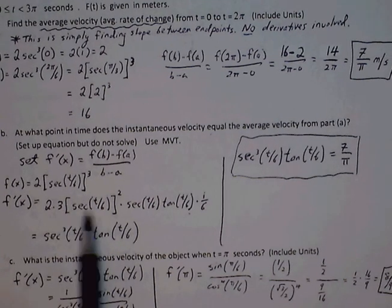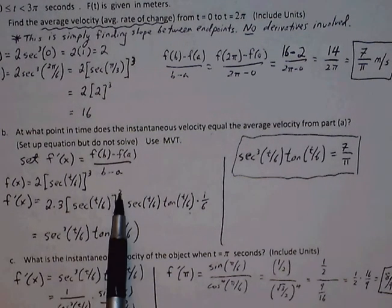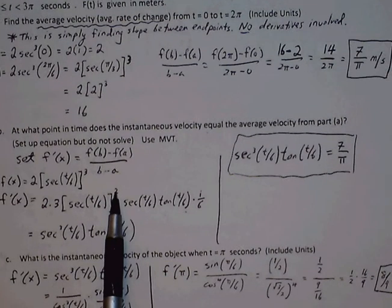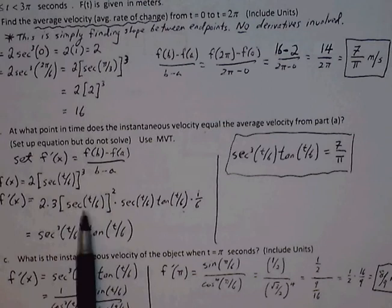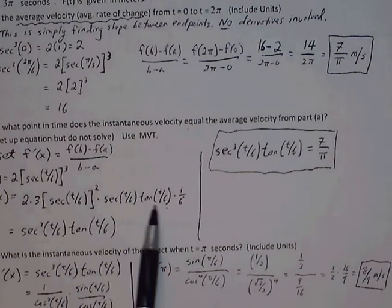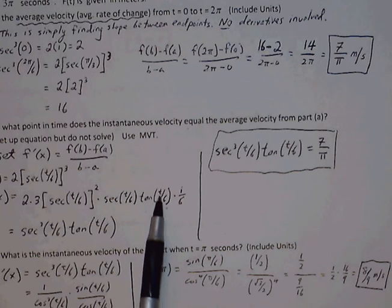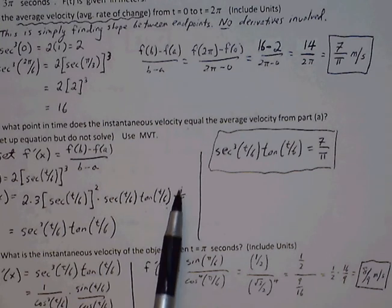Keep the original function, subtract 1 from the exponent, and then we multiply by the inside function's derivative. So secant of u, the derivative of secant of u is secant of u tangent of u times u prime. And u is t over 6, so the derivative of t over 6 is simply 1 over 6.